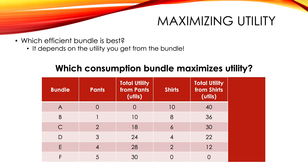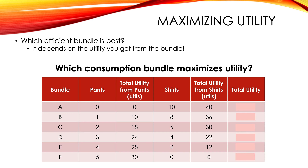What you have to do is figure out the total utility you get from each bundle. From bundle A, you get 0 utils from pants and 40 utils from shirts — total utility of 40. Bundle B: 10 utils from pants and 36 utils from shirts — total utility of 46. Bundle C: 18 plus 30 is 48. Bundle D: 46. Bundle E: 28 plus 12 is 40. And bundle F: 30 utils from pants and 0 utils from shirts, giving a total of 30. Again, all these utility numbers are made up — I just imagined a situation where you get more utils from shirts.